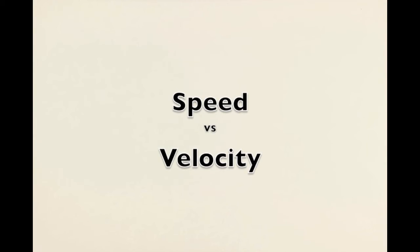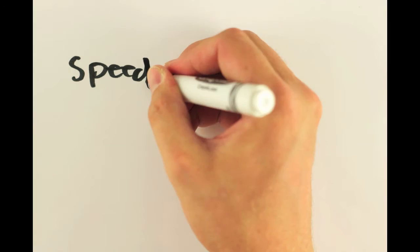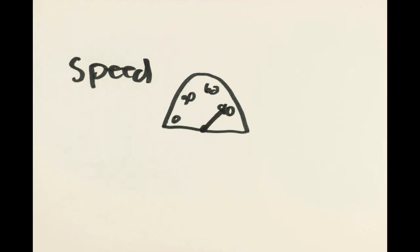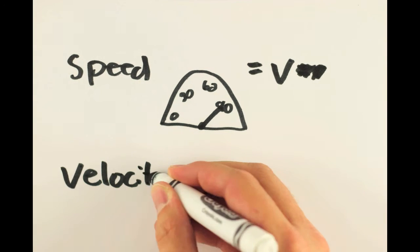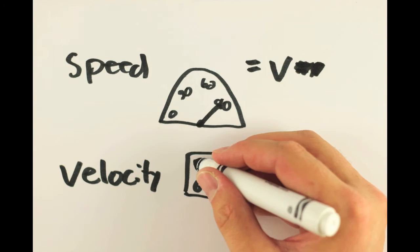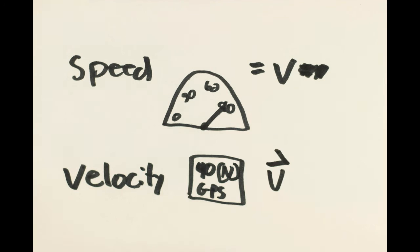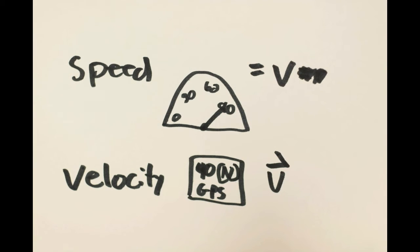Now let's take a look at speed and velocity. Speed is very common to us. We have a speedometer in our car — it tells us how fast we're going, but it doesn't tell us where we're going. GPSes, on the other hand, can tell us how fast we're going and what direction we're going. So they can tell us both the magnitude and the direction, whereas our speedometer only tells us the magnitude, or how fast.